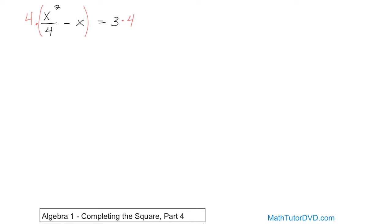What you're going to be left with is just x squared, because the 4 cancels with the 4. Then 4 times negative x gives you negative 4x. On the right-hand side, you'll have 12. This equation is exactly equivalent to the previous one — it has the same solutions as the equation we started with.